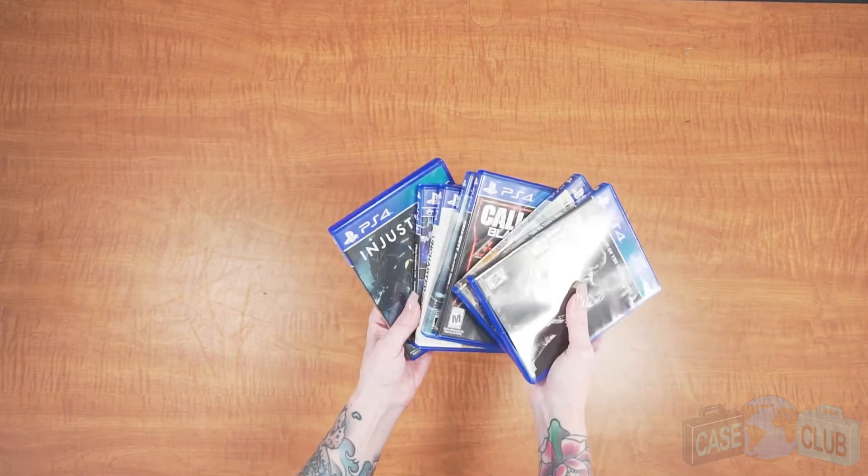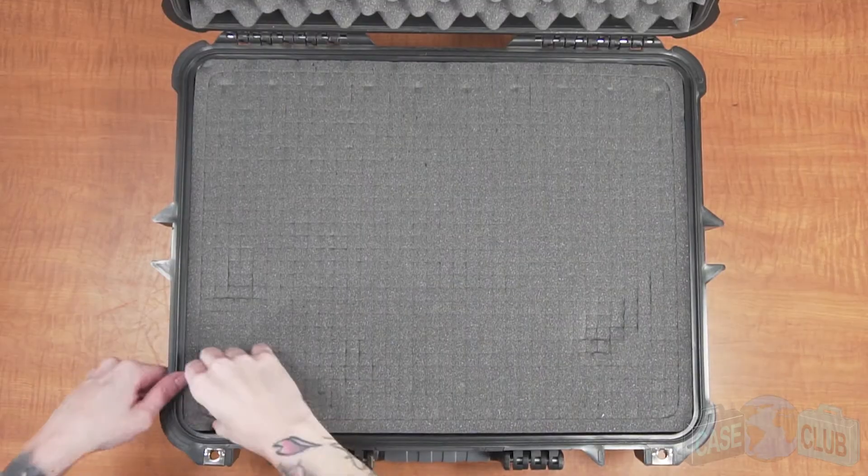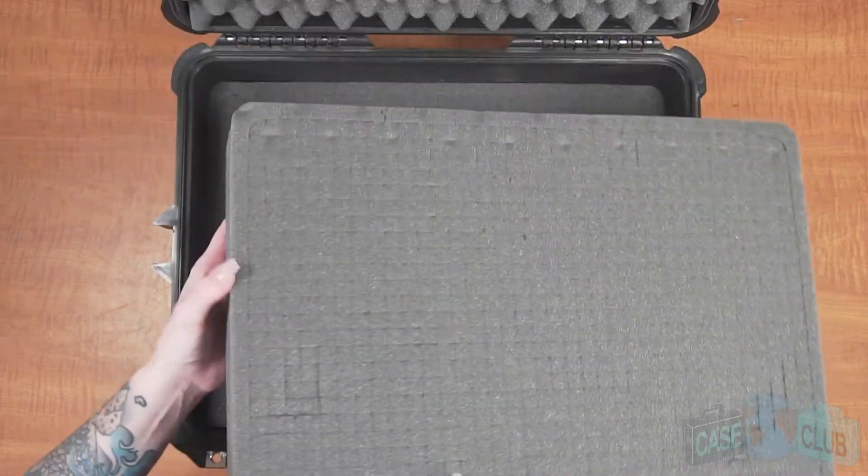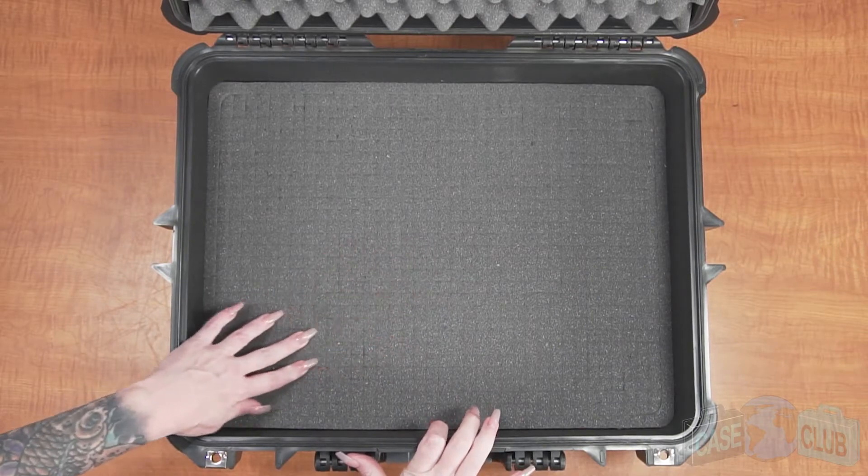two controllers, cords, and games as compactly as possible. This customizable foam gives you the flexibility to create whatever layout you want. You'll notice that the foam in this case comes in two layers. This makes the case perfect for storing as many accessories as possible in as compact a case as possible.